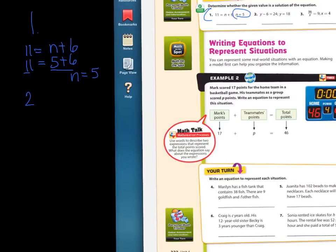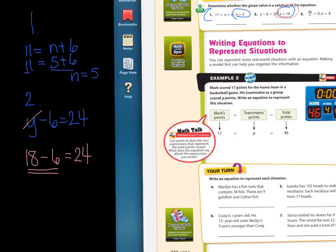Number 2 says y minus 6 equals 24. And they're asking if when we take out the y and put in 18, is that true? So we're going to do that. We're going to take out the y and put 18. 18 minus 6 equals 24. Is that true? When you do this math right here, do you get 24? No. If you added them together, you would get 24. But this is subtraction. 18 minus 6 is actually what? It's really 12. So we can say that y does not equal 18.